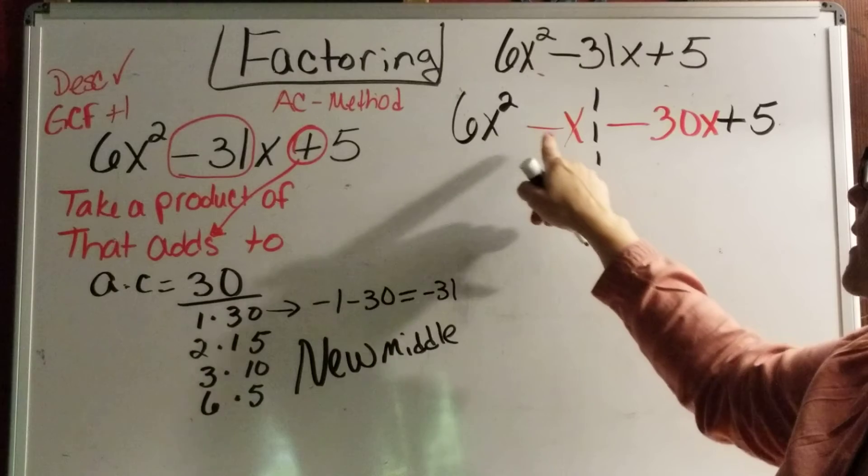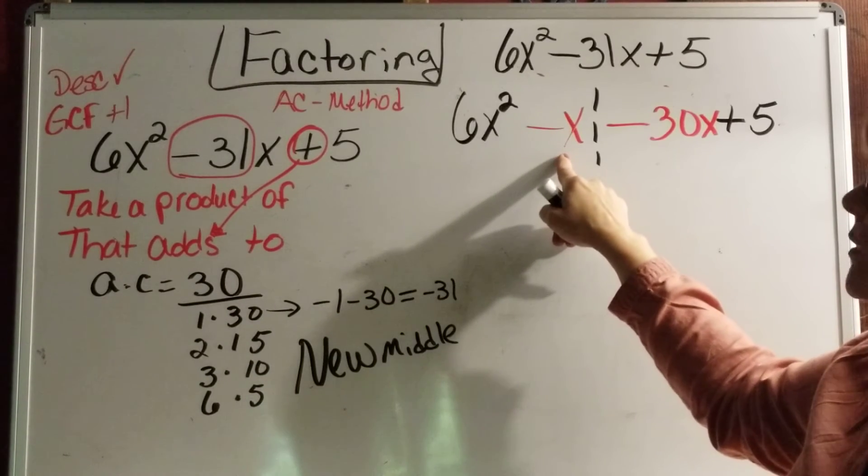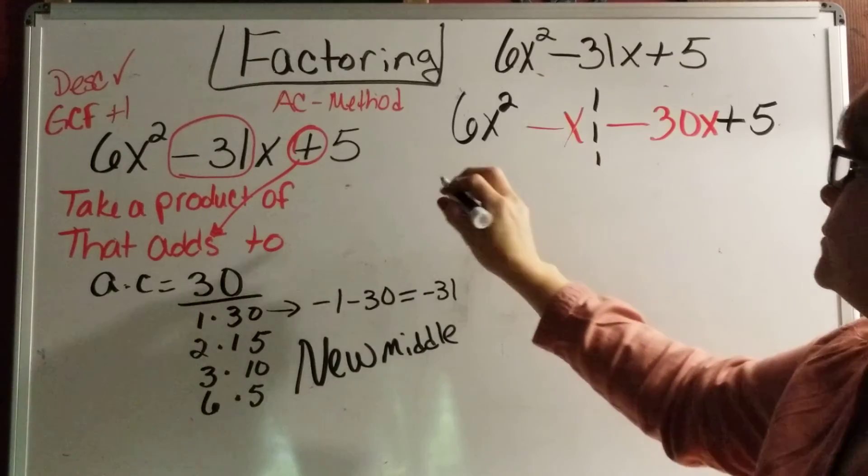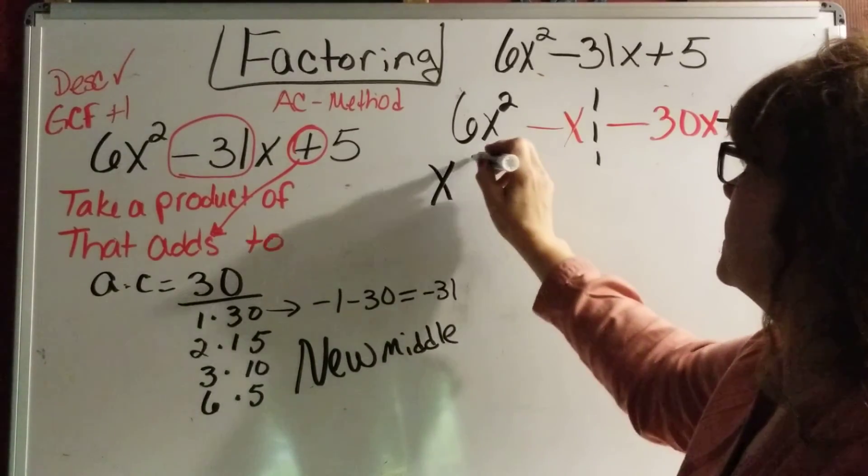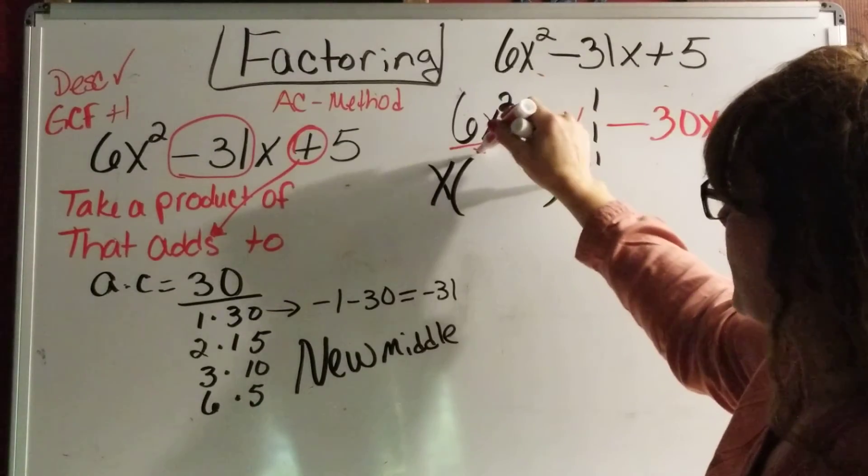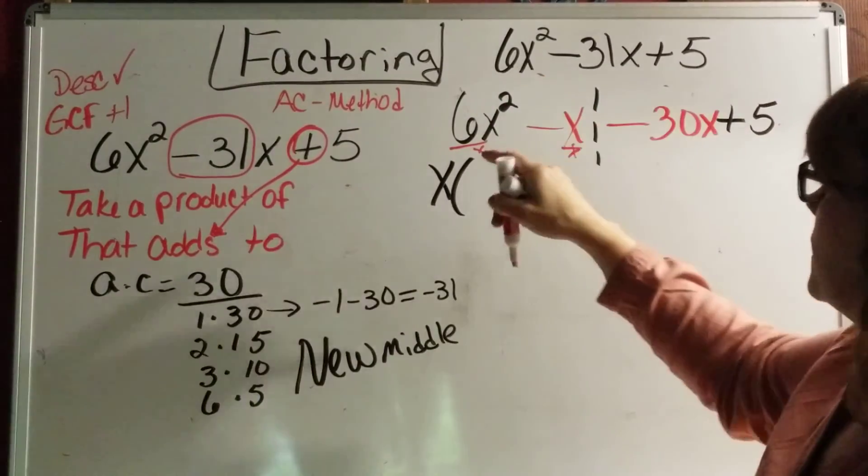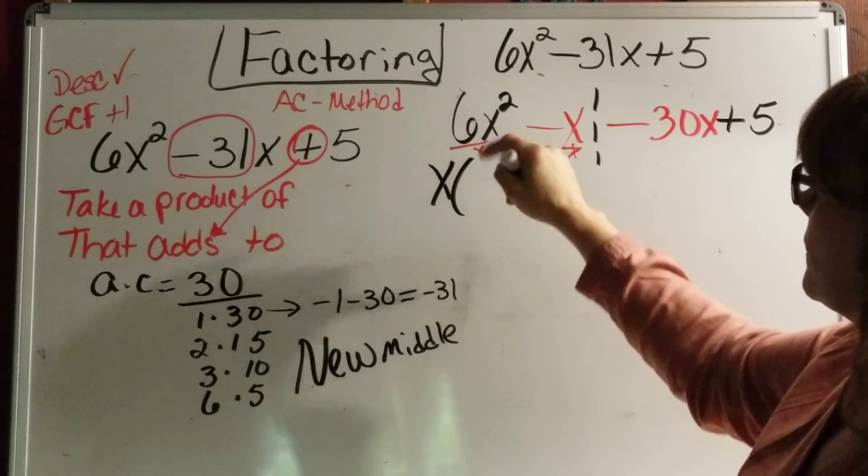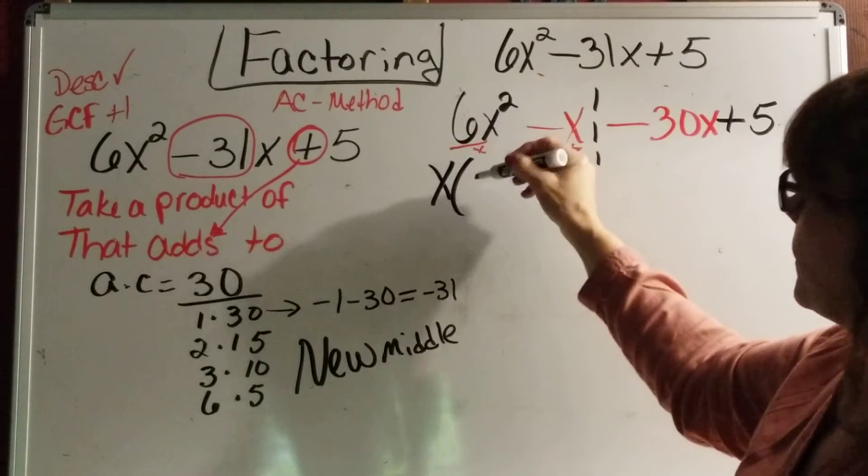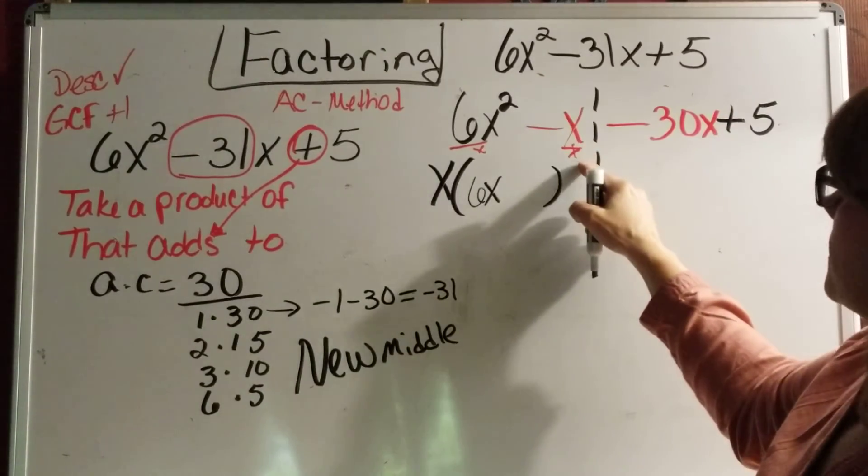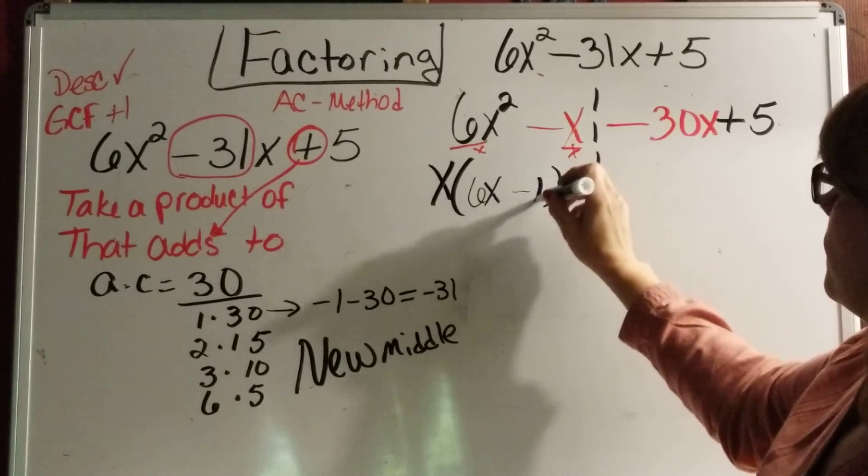Well, they both have an x. And at most, I can pull an x to the first. This one has a 6 and this is a negative 1. So at most, my GCF is an x. So it's the same as dividing this by x. x goes into x squared, leaves me with x, and then brings down the 6. x goes into negative x a negative 1 times.